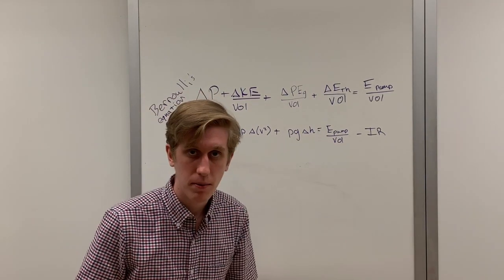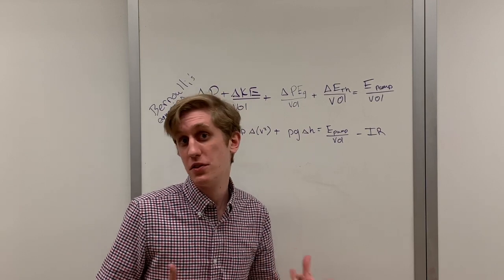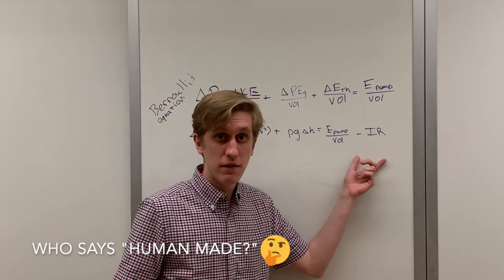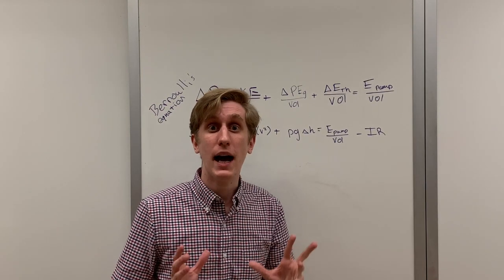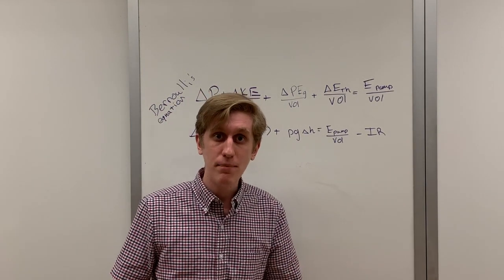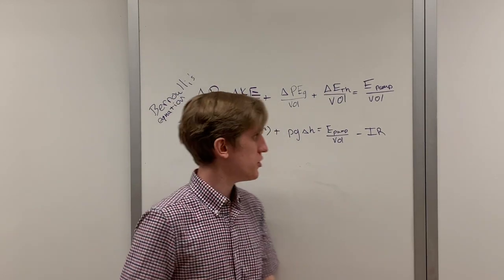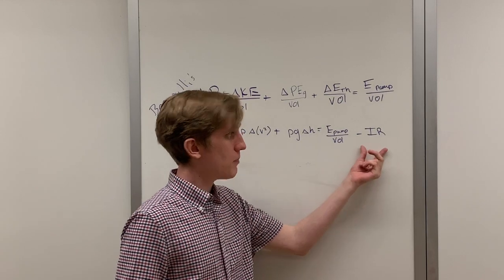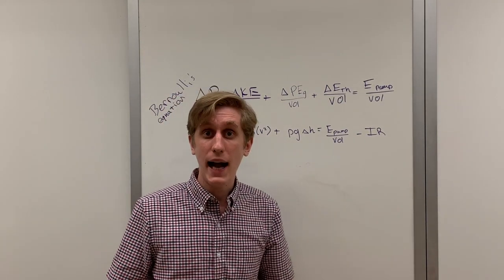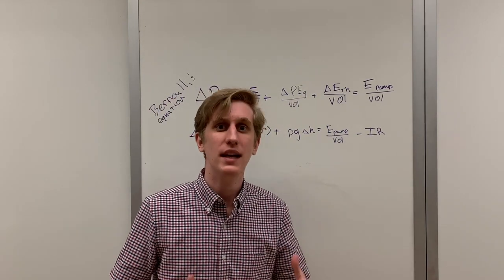The first is with a pump. A pump adds energy to a fluid allowing it to say climb a hill in a human-made waterfall. The other way a fluid's energy can change is by resistance. If a fluid is in a pipe it will rub against the edges of that pipe and lose energy to it. This is represented by this term in the Bernoulli equation I times R where I stands for the current and R stands for the resistance in the pipe.